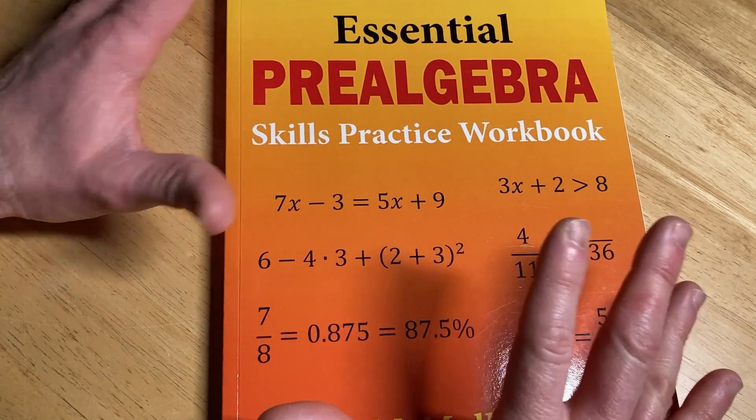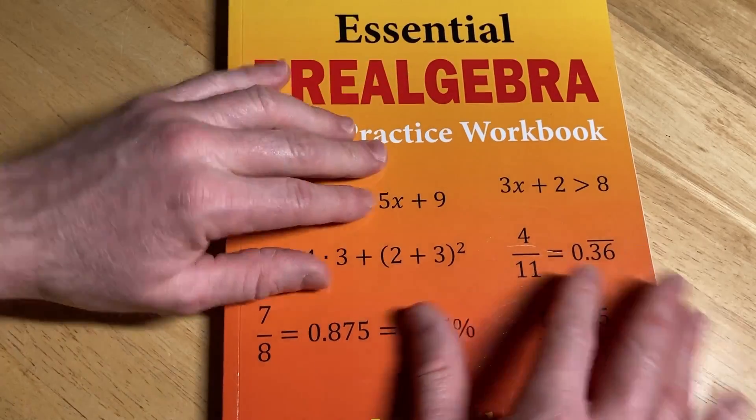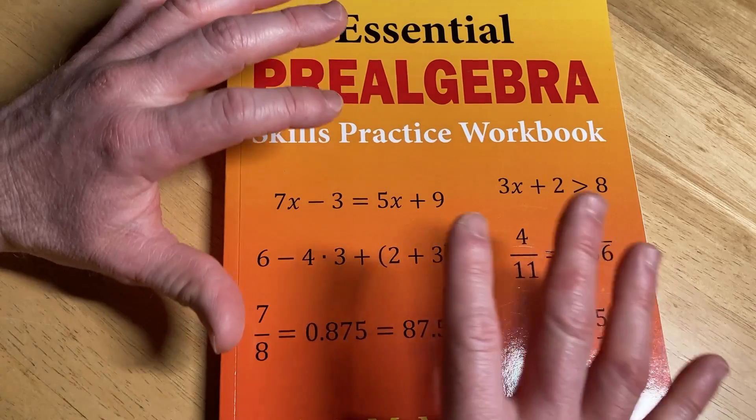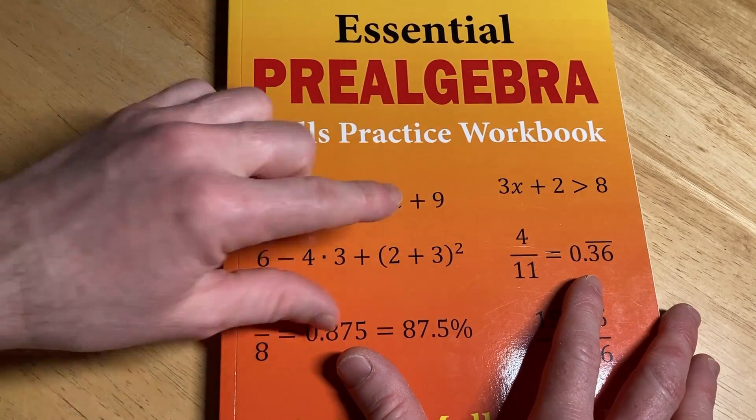Now, it doesn't have everything. There are books that you can buy that have way more math than this. They're way thicker, and they're also way more expensive. This one is really affordable. It doesn't have everything, and it's a workbook, not a textbook.